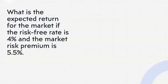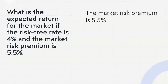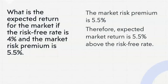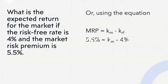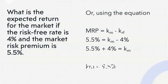Let's look at some basic examples. First: what is the expected return for the market if the risk-free rate is 4% and the market risk premium is 5.5%? The market risk premium of 5.5% means the market return is 5.5% above the risk-free rate, so the market return is 4% plus 5.5%, which equals 9.5%. Using the equation: market risk premium equals market rate minus risk-free rate; solving gives market rate equals 9.5%.